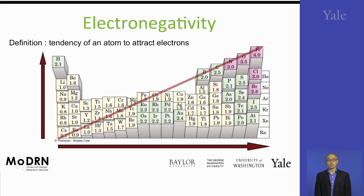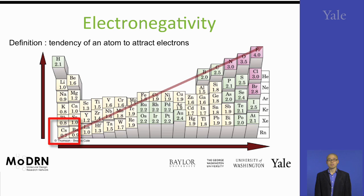As one goes across a period from left to right, the electronegativity goes up. As one goes from the top to the bottom in a column, the electronegativity goes down. That leaves fluorine as the most electronegative element in the periodic table and cesium as the least.